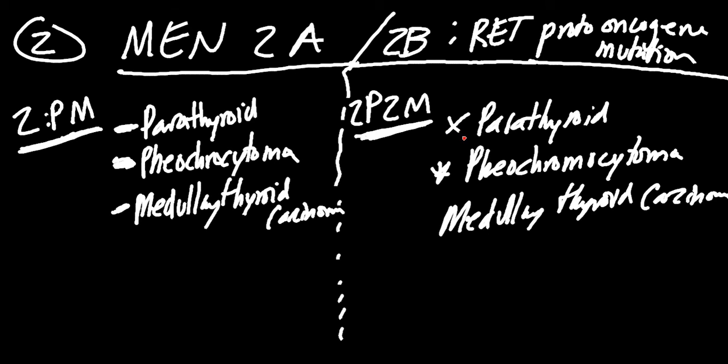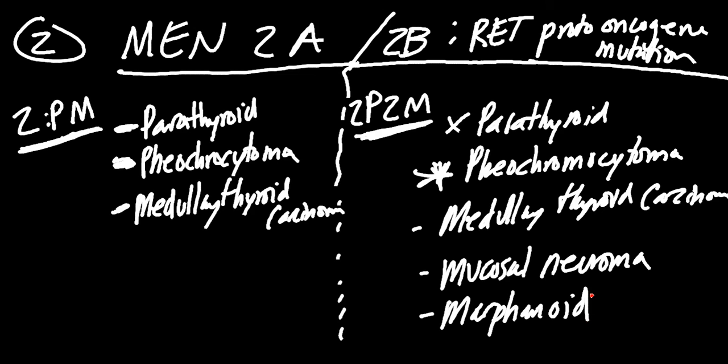You'll see some people list parathyroid as an MEN-2B disorder. Really, the main one is pheochromocytoma. You've got medullary thyroid cancer or carcinoma, and then you've got mucosal neuroma. Also, throw in here marfan-like syndrome. So you could have a third M, marfanoid body appearance, a marfanoid phenotype. You may also see that marfanoid phenotype over here.